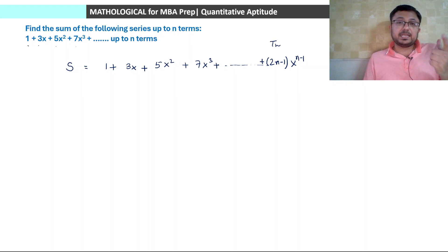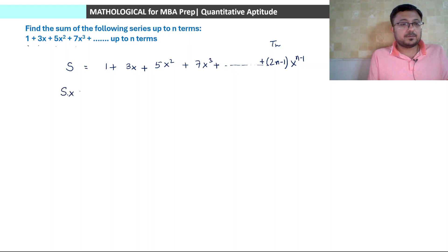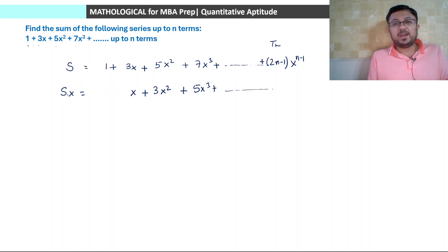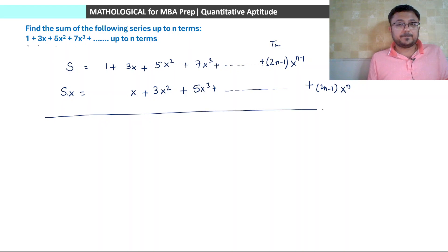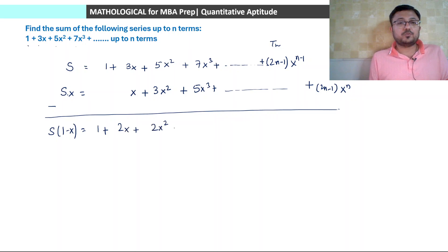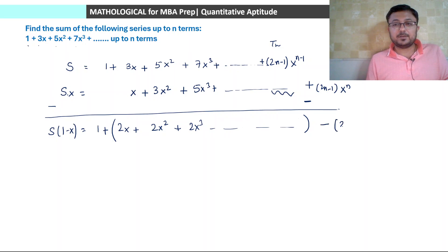Multiply S by x and shift one term to align: xS = x + 3x² + 5x³ + ... + (2n−1)x^n. Subtract: S − xS = S(1−x) = 1 + (3−1)x + (5−3)x² + (7−5)x³ + ... − (2n−1)x^n = 1 + 2x + 2x² + 2x³ + ... − (2n−1)x^n. Be careful: the first term 1 is separate; the remaining 2x + 2x² + ... is a GP with n−1 terms (not n terms).